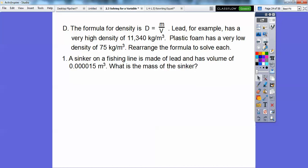Alright, so here's number one. A sinker on a fishing line is made of lead and has a volume of 0.000015 meters cubed. So what is the mass of the sinker? So we're going to first solve this formula up here for M to get the mass.